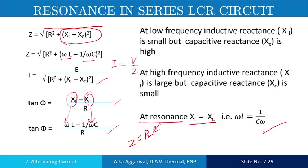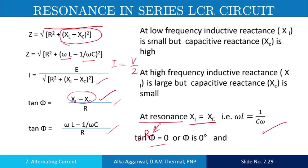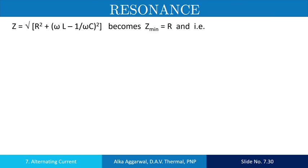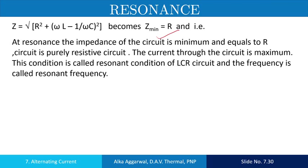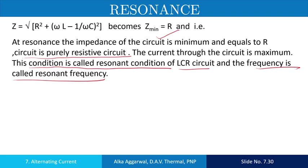Similarly, the phase angle between the current and the voltage: since XL equals XC, this factor is equal to zero, so tan φ equals zero, or φ equals 0 degrees. It means the current and the voltage at resonance are in phase. So impedance is equal to R, the current is maximum, and the circuit behaves as a purely resistive circuit. This condition is called the resonant condition of the circuit and the frequency is called the resonant frequency.